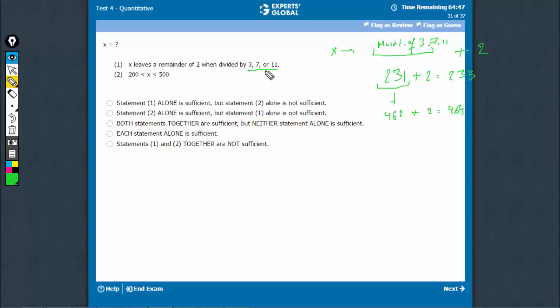That 3, 7, 11 would lead to a remainder of 2. So, the value of x can be many. Infinite number of possibilities are there. So, statement 1 is not sufficient.